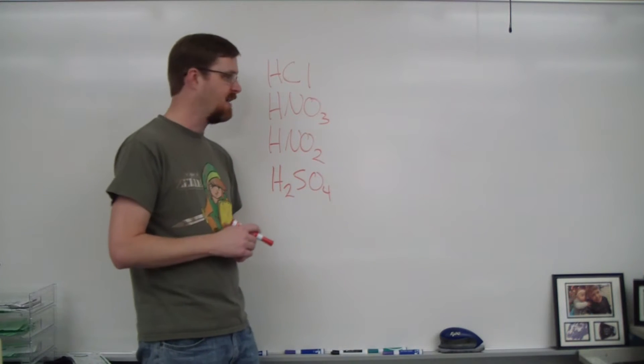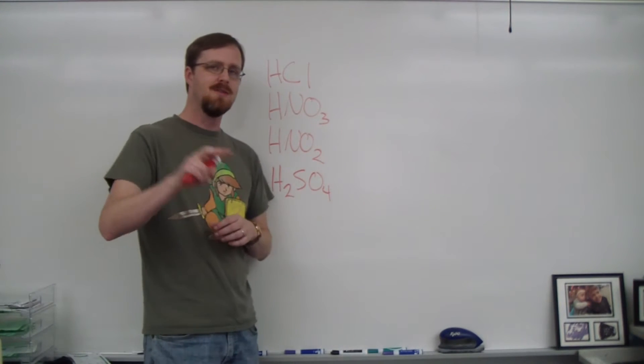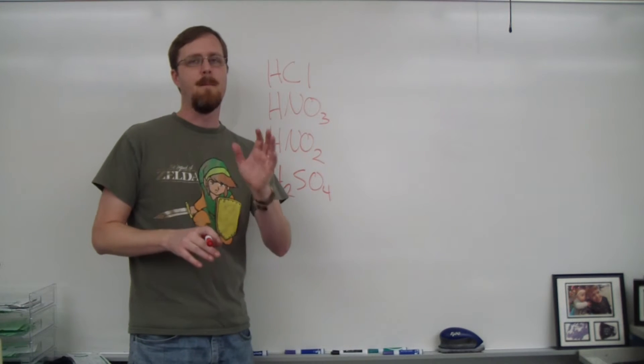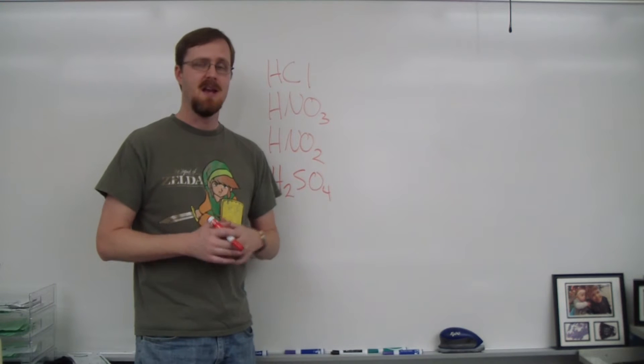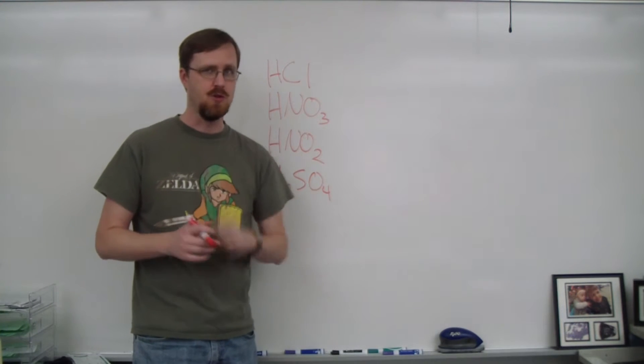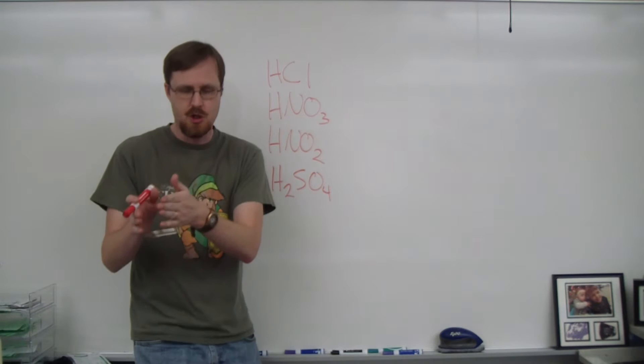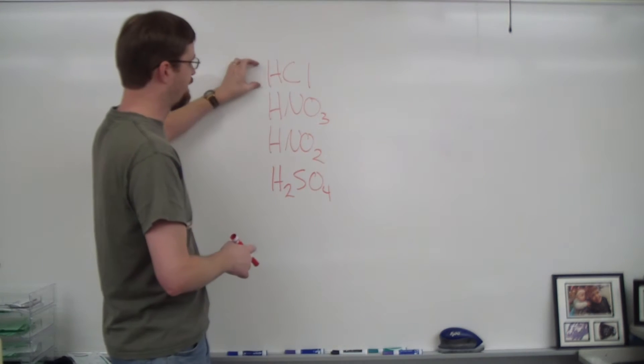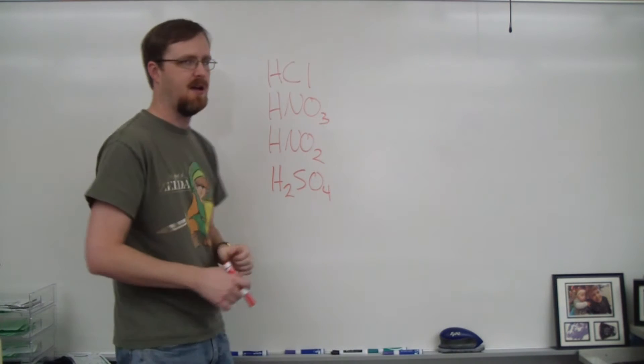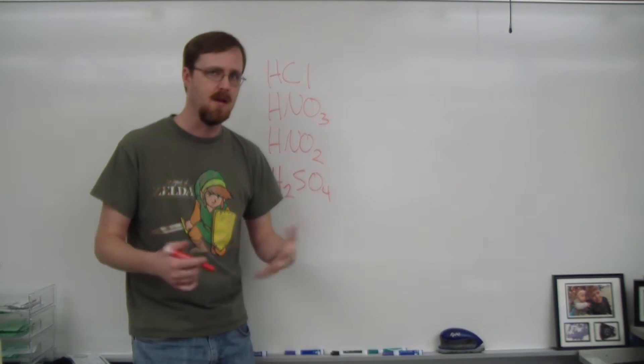All right, so without any further ado, let's get on into it. There are two types of acids. There are binary acids and polyatomic. Now binary means two. So a binary acid has hydrogen and only one other element. So this first example here, HCl, is an example of the binary acid.